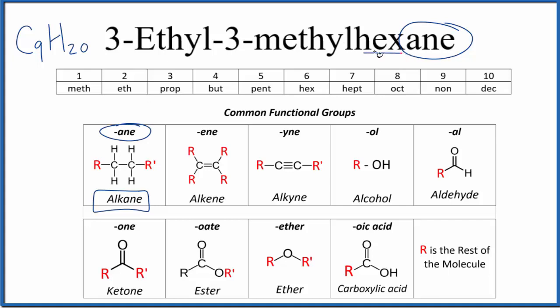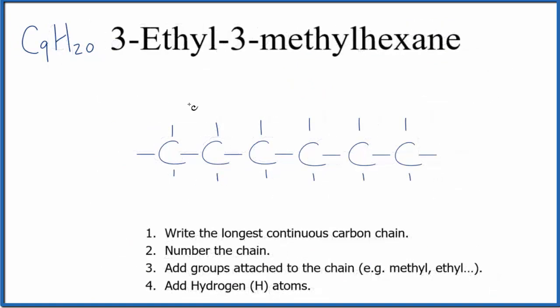And the hex, that tells us we're going to have six carbons. So let's start with a chain of six carbon atoms and they'll all have single bonds. So right now we have just hexane, six carbons, single bonds. That's our longest continuous chain.